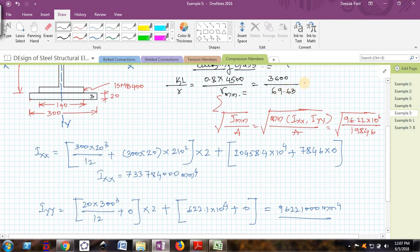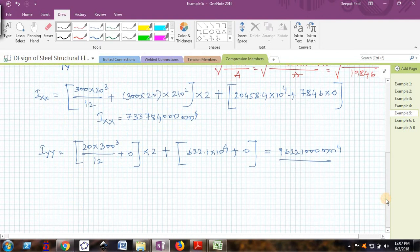For KL/R, I am getting 51.7. For 51.7, the value of F_CD as per table 9c is something around 180.45 N/mm².